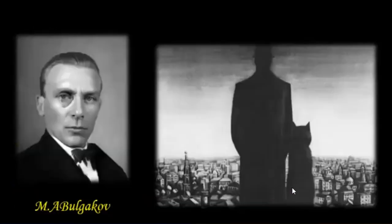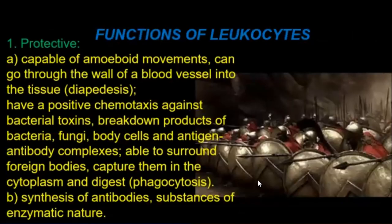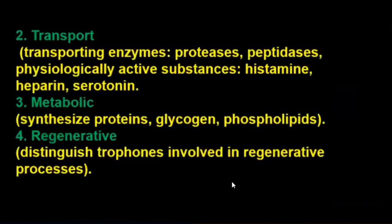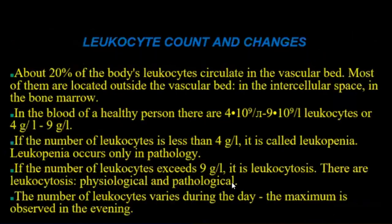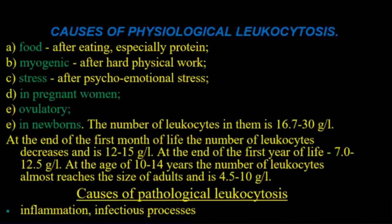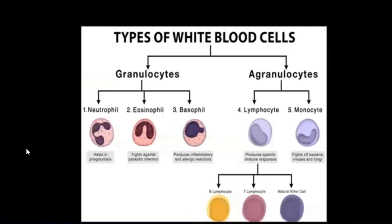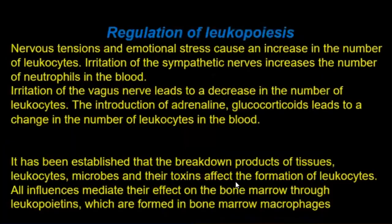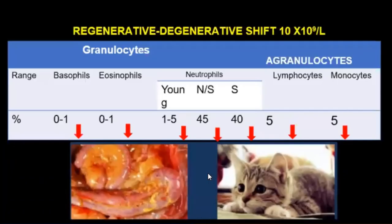Regulatory anemia. Functions of leukocytes include: protective, transport, metabolic, and regenerative. Leukocyte count changes — causes of physiological leukocytosis: food, myogenic, stress, in pregnant women, voluntary, and newborns.